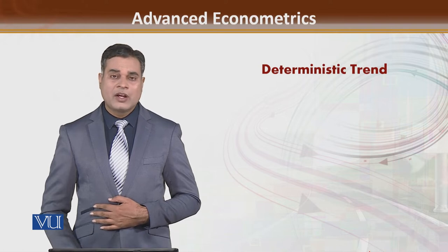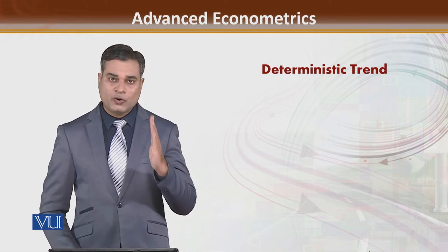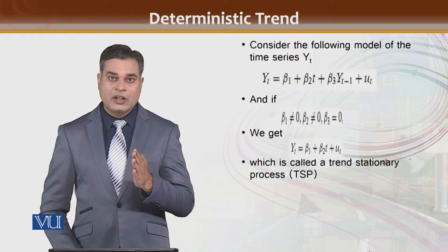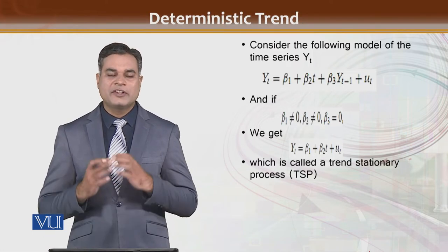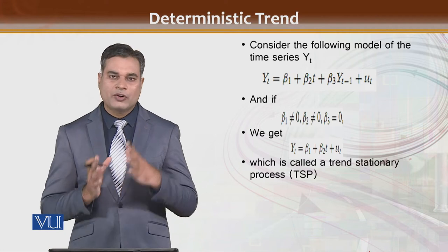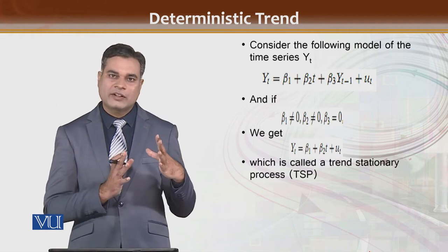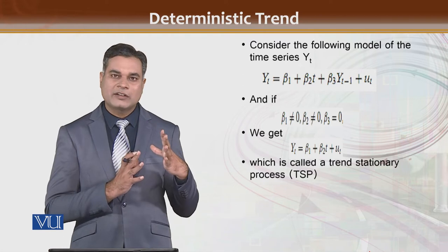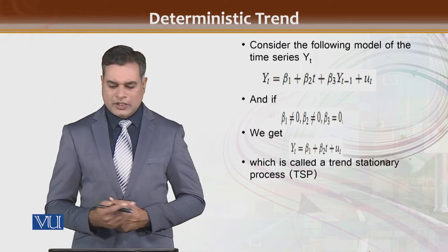Kaunsi series hogi jo pure random walk hogi, kaunsi series hogi jisme deterministic trend hoga, aur kaunsi series hogi jisme deterministic trend bhi hoga aur uske saath saath random walk bhi hoga — aap usme drift bhi dekh saktay hain. Toh ab next we have like yt is equal to beta 1 plus beta 2t plus beta 3 yt minus 1 plus error term.